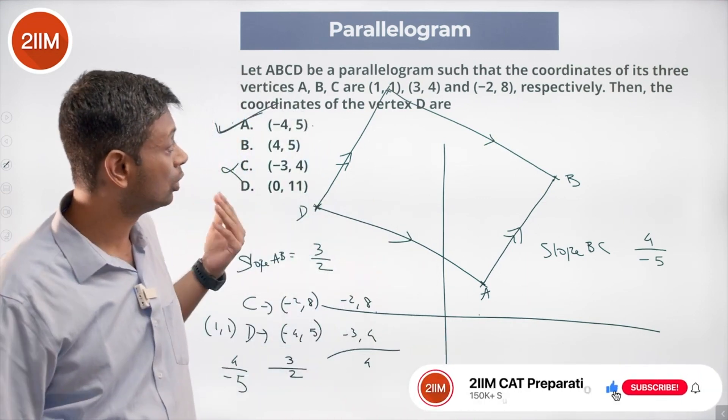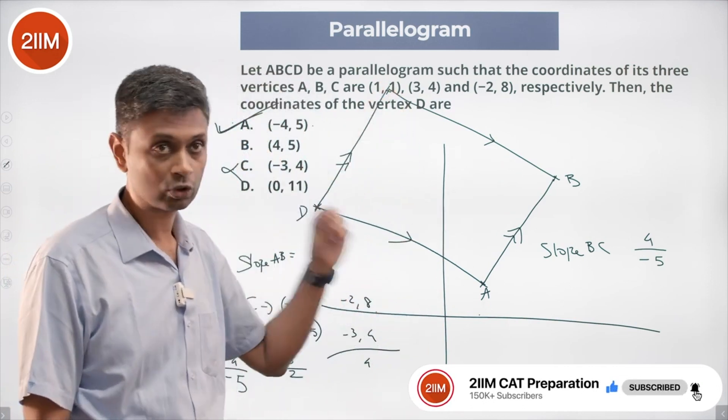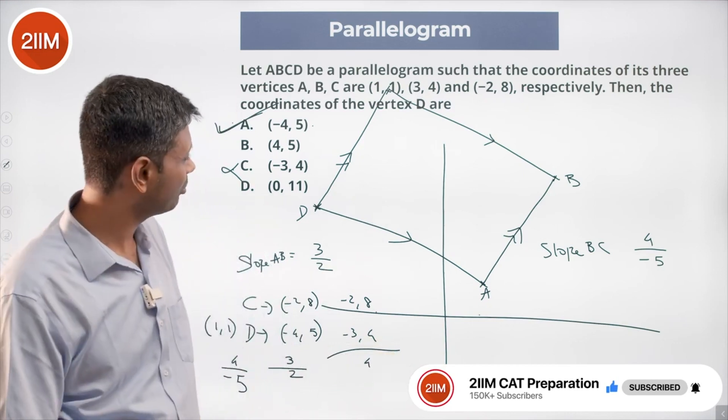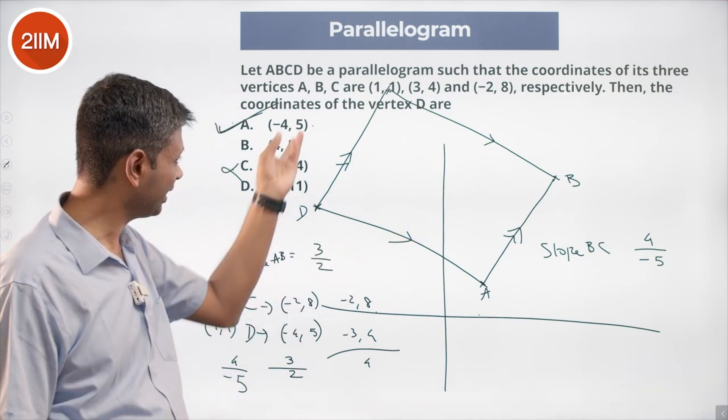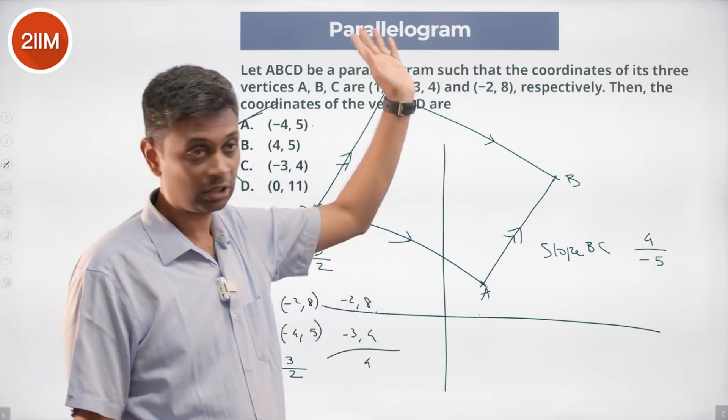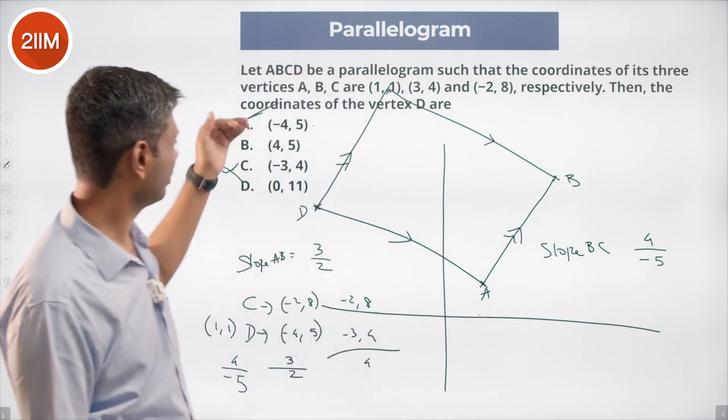Going from answer choices after drawing a diagram, one can substitute that as (p,q). Slope of AB equal to slope of CD, slope of BC equal to slope of AD. You can solve algebraically to get that, or you can plonk in from answer choices, or you can visualize the diagram and plonk the better-looking answer choices. (0,11) is going to be somewhere here, that doesn't work. (4,5) that side won't work. One of these two. This works.